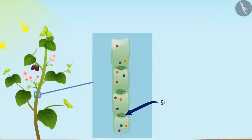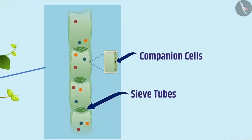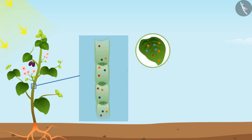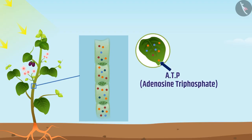Phloem consists of sieve tubes and companion cells. The transportation of soluble products takes place in the sieve tubes with the help of adjacent companion cells. In plants, the transport of food takes place actively with the help of an energy molecule called ATP present in the companion cells. The soluble products produced in the leaves enter the phloem using ATP.